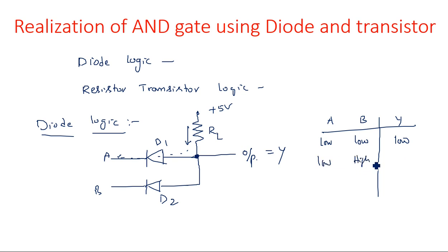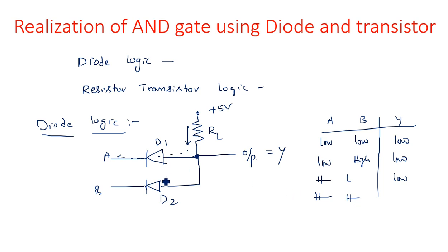Similarly, for low-high and high-low input combinations, if any one of the diodes is on, the output goes low. When both inputs are high, diodes D1 and D2 are open-circuited, and the current has a path towards the output, so the output becomes high.